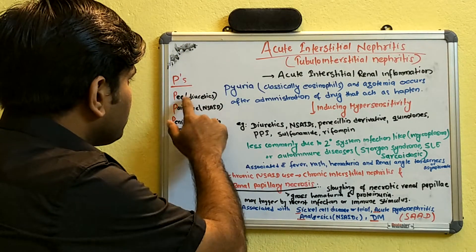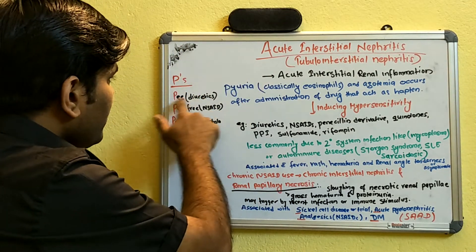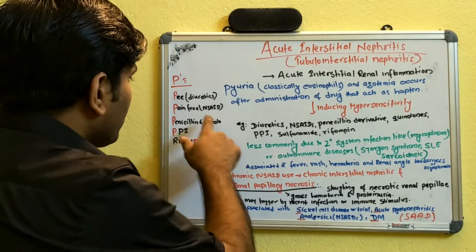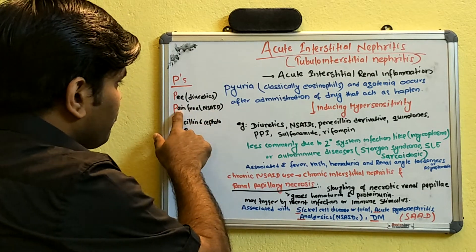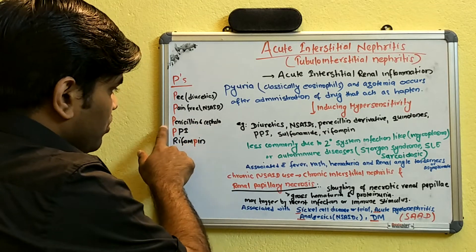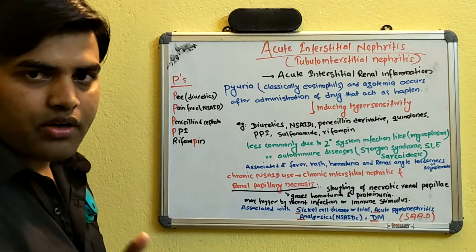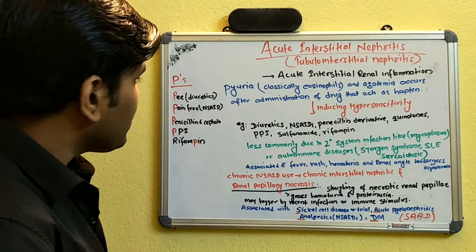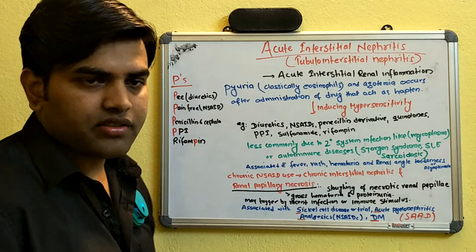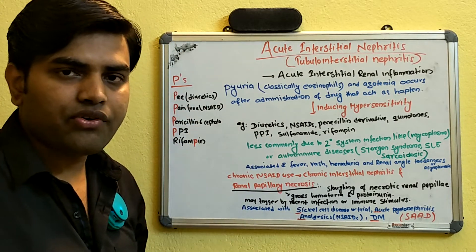A useful mnemonic from First Aid to remember the causes of acute interstitial nephritis is the '5 P's': diuretics (causing urination/Pain), NSAIDs (Pain relief), Penicillins and cephalosporins, Proton pump inhibitors, and rifamPin/sulfonamides. These five categories help you remember the main drug causes of acute interstitial nephritis.